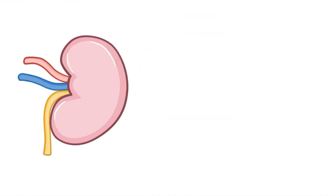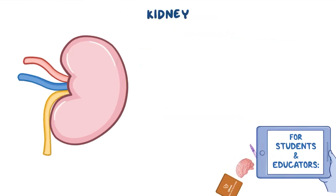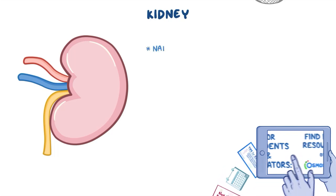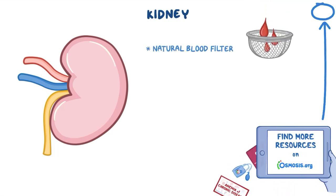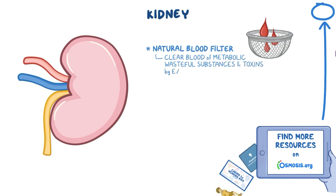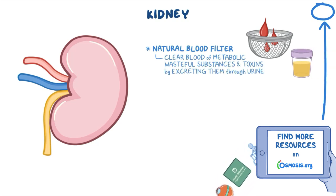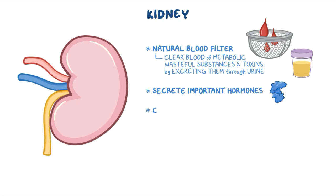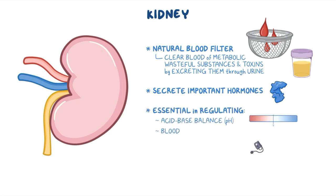Let's quickly review some kidney physiology. We can think of the kidneys as the body's natural blood filter. Their main function is to clear blood of metabolic waste substances and toxins by excreting them through urine. In addition, they secrete important hormones and are essential in regulating the acid-base balance, pH, blood pressure, and electrolyte levels in the body.